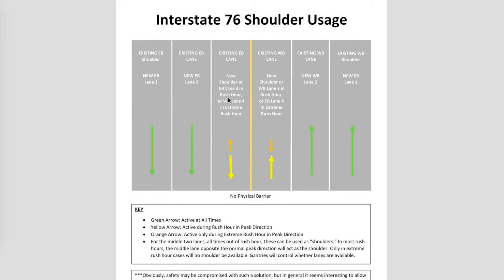This is a diagram showing Interstate 76 in Philadelphia. Interstate 76, also known as the Schuylkill Expressway, is extremely crowded in the morning and evening rush hour directions. This also applies to any other crowded four-lane highway, so I'm just using Interstate 76 as an example.